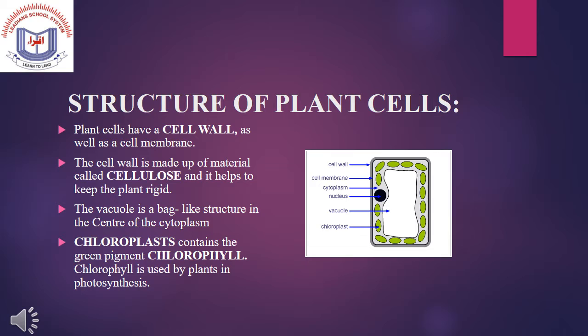Chloroplasts contain a green pigment called chlorophyll. Chlorophyll is used by plants in photosynthesis. Photosynthesis is the process by which plants make their own food.